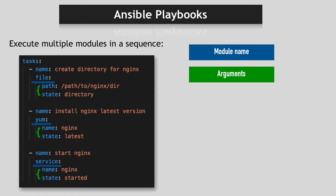This whole block — defining which tasks should be executed on which hosts, with which user, plus additional attributes — is called a play. In a single file you can have multiple plays that depend on each other or need to be executed in sequence. For example, one play for web servers executing tasks on web server hosts, and another play executing tasks on database hosts. The file containing one or multiple plays is called a playbook. A playbook describes how, in which order, and on which machines the modules within tasks should be executed — it orchestrates the module execution. You can name plays and tasks using the name attribute.